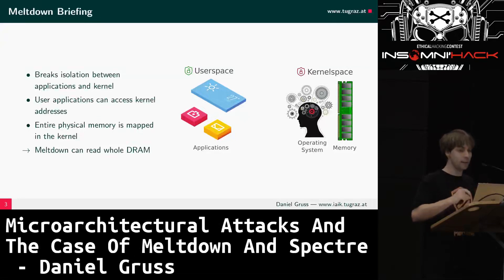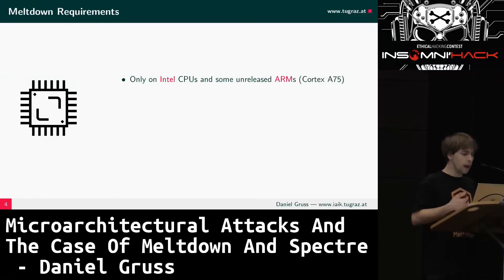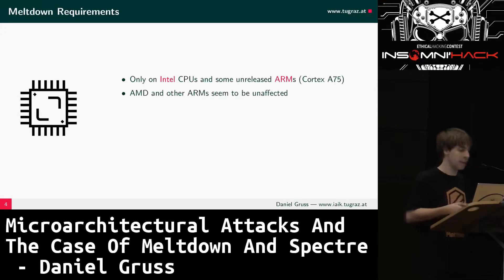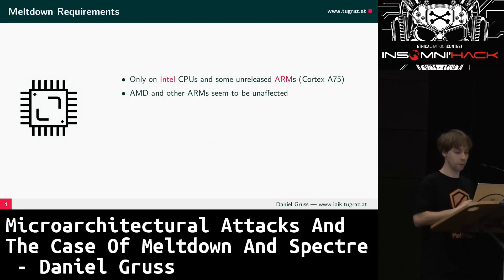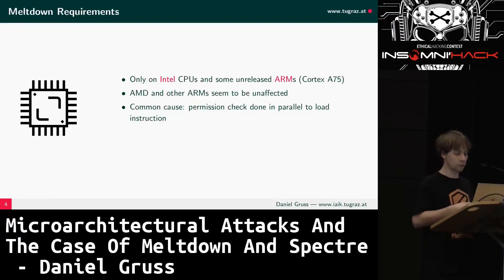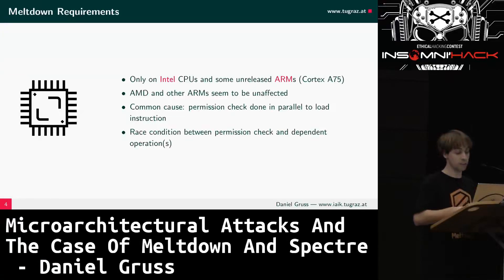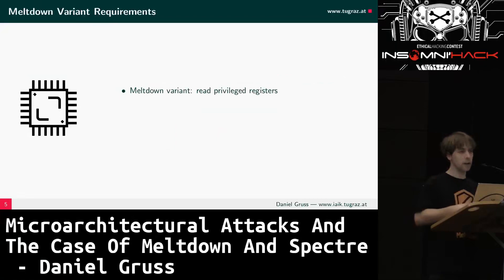User applications can access anything in the kernel; they can access the entire physical memory, including all the memory of other applications. Meltdown can read the entire DRAM — there is no region in DRAM that Meltdown can't read. The requirements for Meltdown: you need an Intel CPU or one specific ARM CPU. AMDs and other ARMs seem to be unaffected, though no one has been able to reproduce it on those.